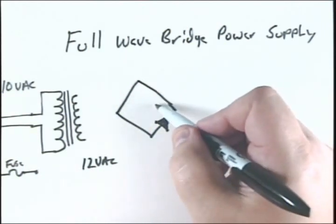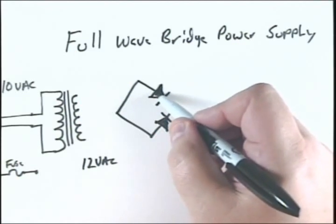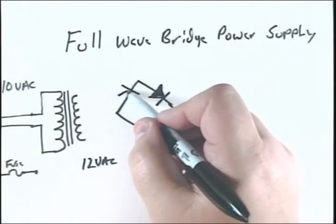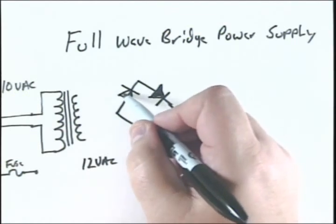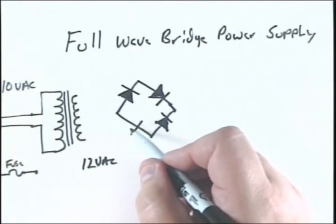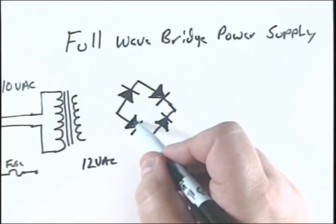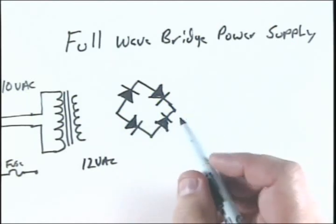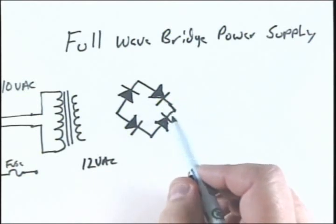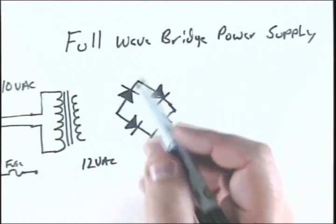I'm going to continue the diodes pointing that same direction over here, and over here. Remember, the diode turns AC into DC. Now you'll notice we have the two cathodes of the diode here, two anodes there.